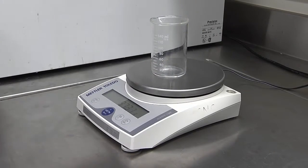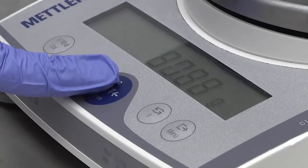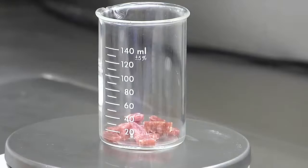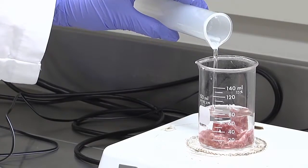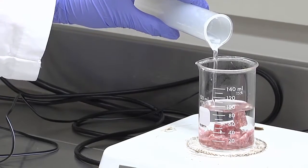First, tare the beaker on the scale. Place 10 grams of the ground meat product in the beaker. Next, add 90 milliliters of distilled water to the beaker.